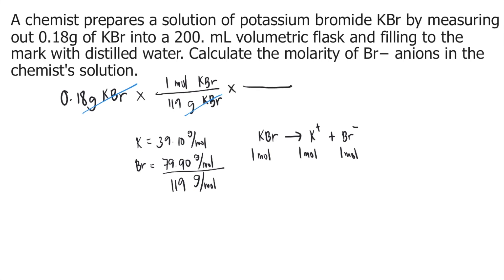So we can put into our solution, one mole of KBr produces one mole of Br⁻. The moles of KBr cancel out, and now you have the moles of Br⁻. If you solve this in your calculator, 0.18 times 1 divided by 119, that's approximately 0.00151 moles of Br⁻.